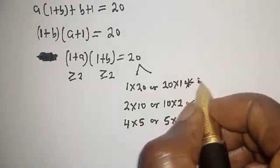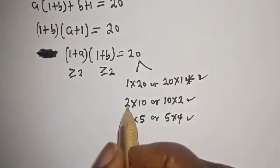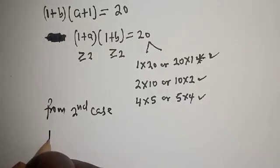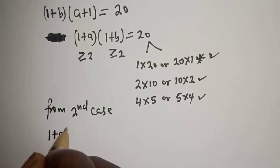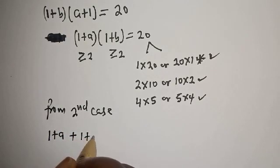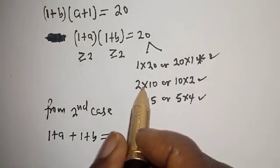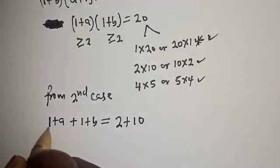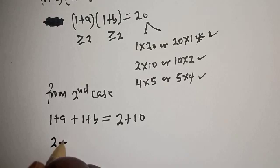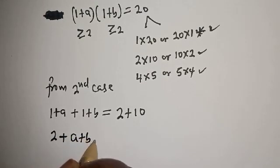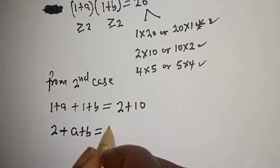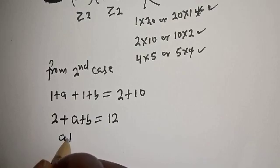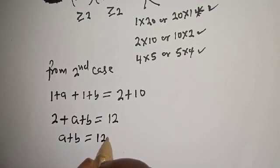From the second case, we have 2 and 10. So (1 + A) + (1 + B) = 2 + 10. That is, 2 + A + B = 12. Therefore, A + B = 12 - 2 = 10.